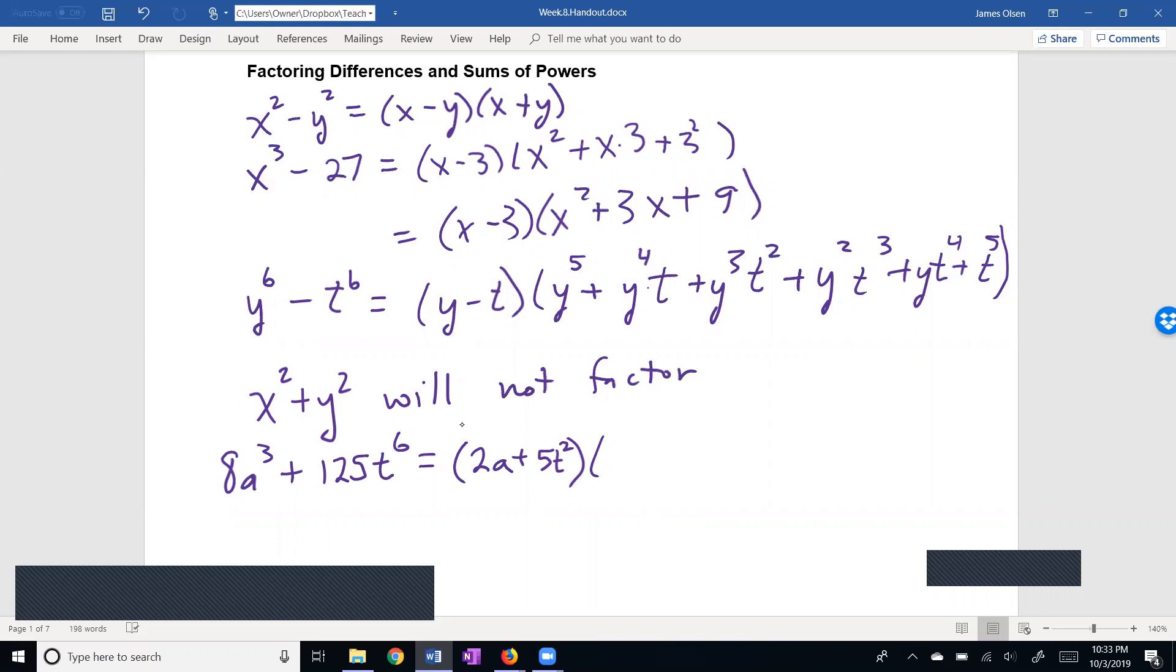Now over here I'm going to have decreasing powers on 2a. So this is 2a quantity cubed and this is 5t squared quantity cubed. So 2a quantity squared would be 4a squared. Now it's important now in order to get our canceling to work out that we have every other term positive and every other term negative. So we use minus 2a times 5t squared plus, now 2a to the zero power is going to be 1, I don't need that, but I do need 5t squared squared.